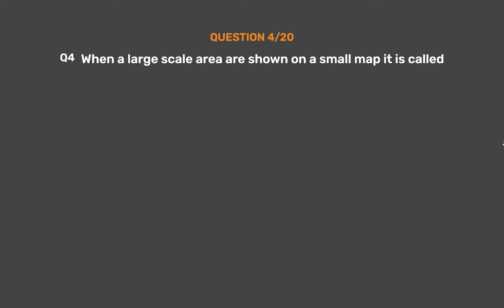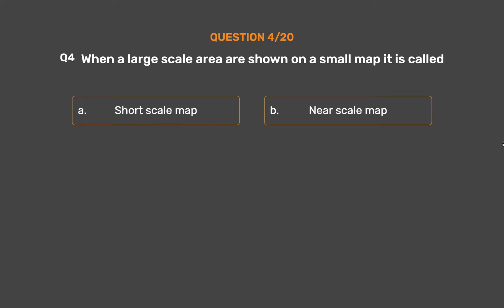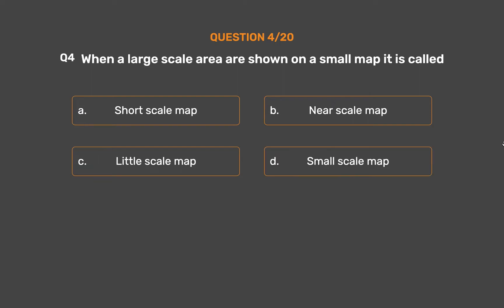Question number 4. When a large area is shown on a small map, it is called — Option A: Short scale map. Option B: Near scale map. Option C: Little scale map. Option D: Small scale map.